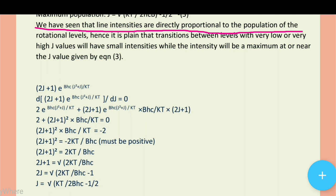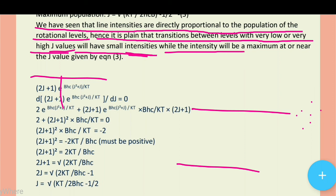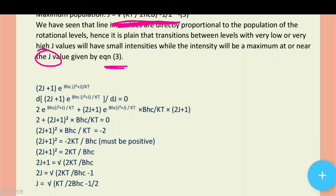We have seen that the line intensities are directly proportional to the population of the rotational levels. The greater the number of molecules in a population, the greater the intensity. Hence it is clear that transitions between levels with very low or very high J values will have small intensities, while the intensity will be maximum at or near the J value given by equation three.